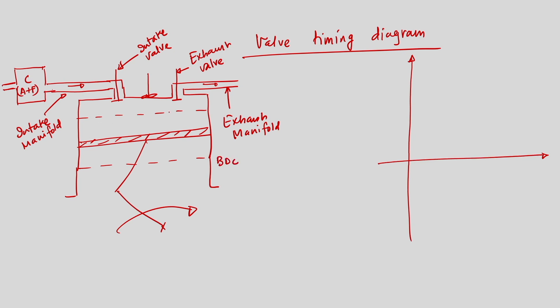The high-pressure, high-temperature gas creates a thrust on the piston face after combustion, allowing the piston to travel from top dead center to bottom dead center. This is BDC and this is TDC. Essentially, there is a continuous change in volume and pressure during different strokes. The valve timing diagram maps the thermodynamic states of the charge at the end of different strokes — that is the PV diagram.